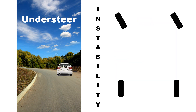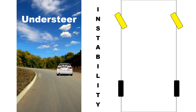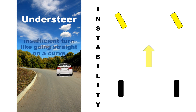When a car understeers, especially when speeding up on a corner, it turns insufficiently because the front wheels lose grip. The most extreme case of understeering is that the car goes straight because it didn't turn at all.